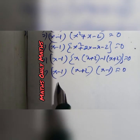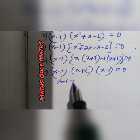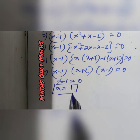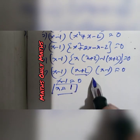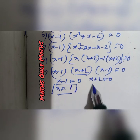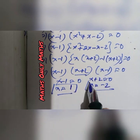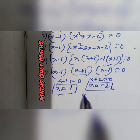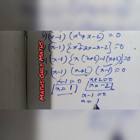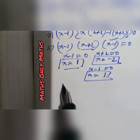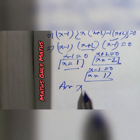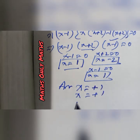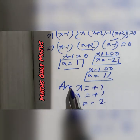Now, when x minus 1 equals to 0, then x equals to 1. One solution is plus 1. When x plus 2 equals to 0, x equals to minus 2. The other solution is minus 2. So the solutions are x equals to plus 1 and x equals to minus 2.